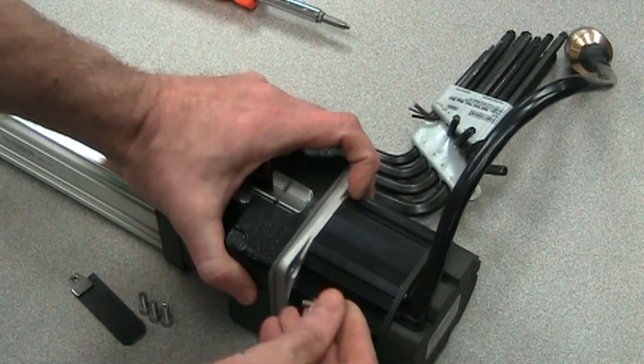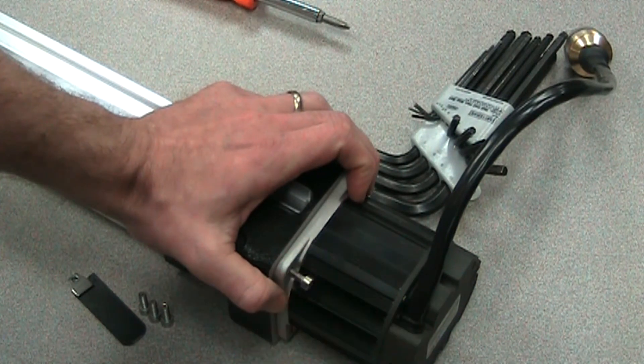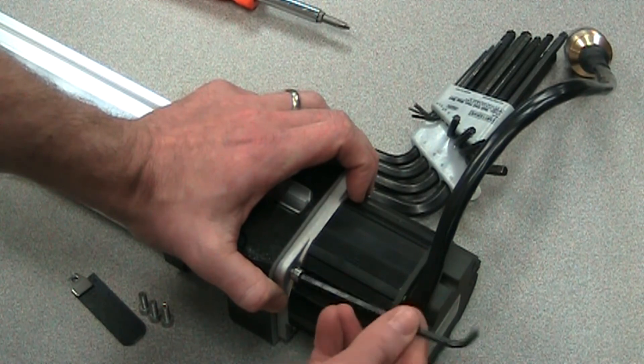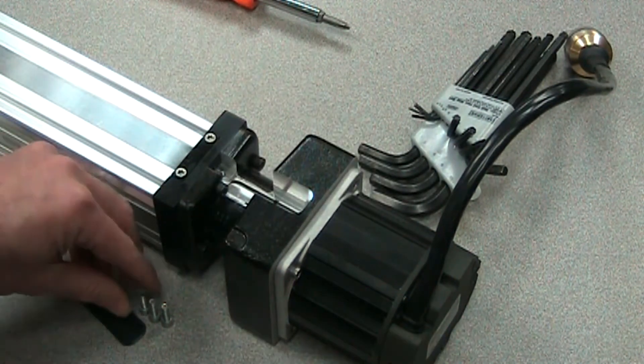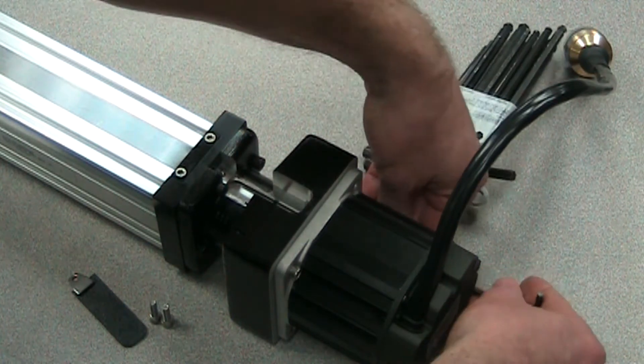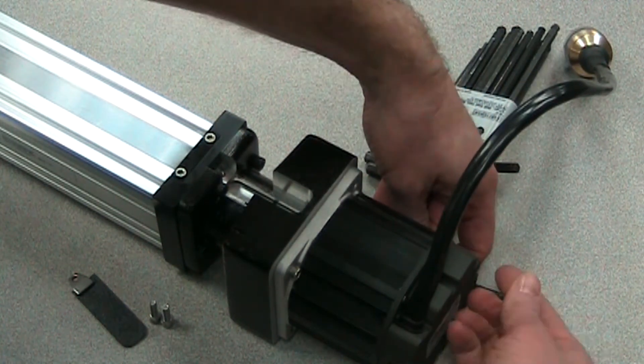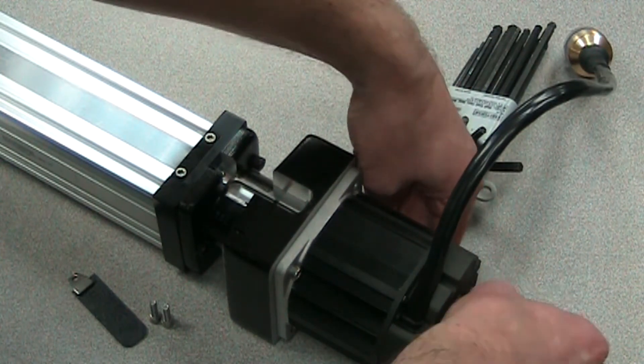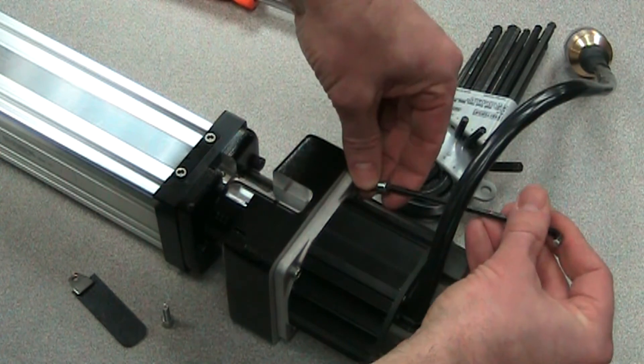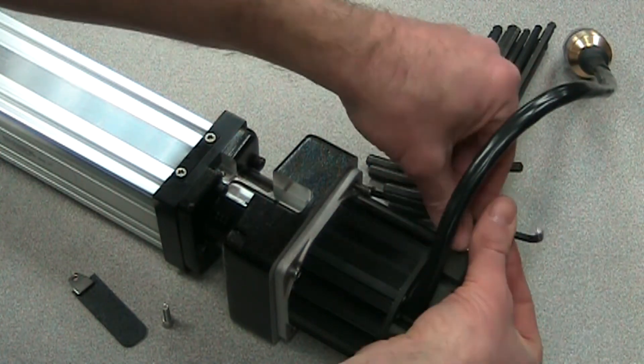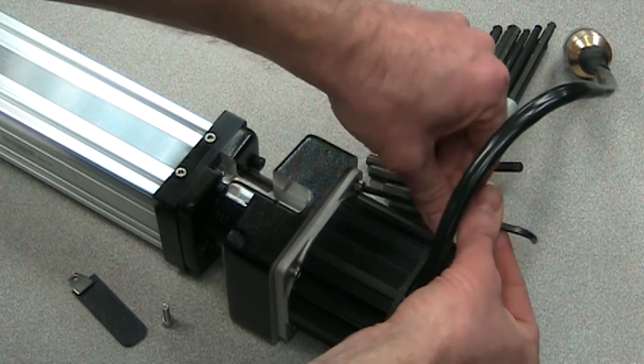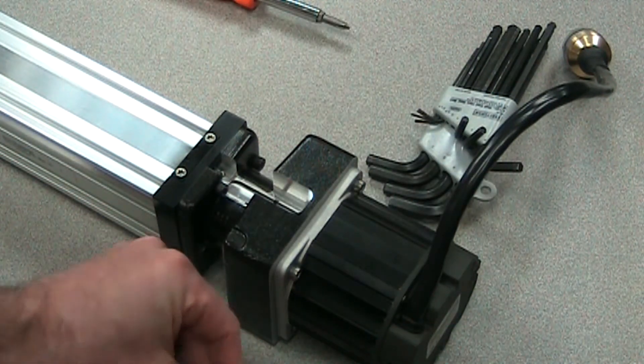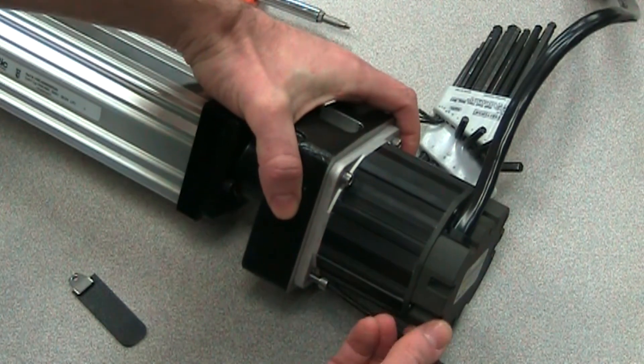And we'll put these four screws in. The four screws just can be tightened at this time to just a loose position there. We'll get them all four started. And then once they're all in place, we'll do a cross torque to make sure that the motor is appropriately attached and there's no skewing.